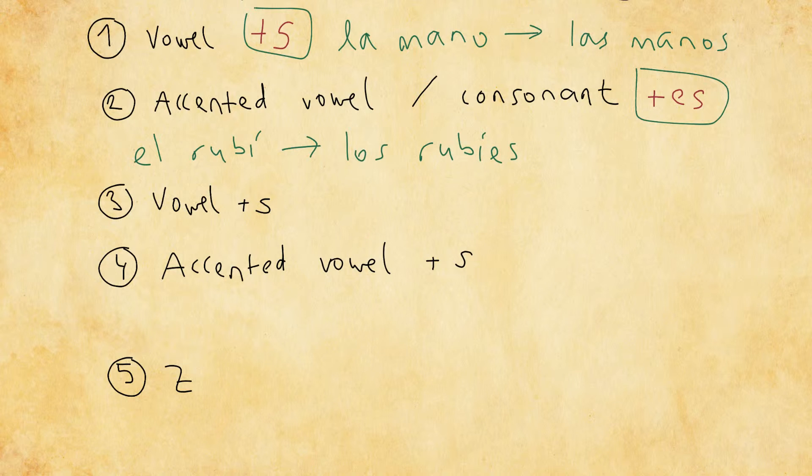And to demonstrate a word with the consonant, for example, el papel, which means paper. El papel. For the plural, los papeles. So again, I just add the suffix es at the end. Los papeles.